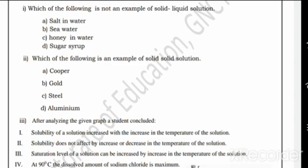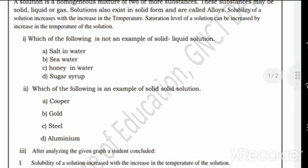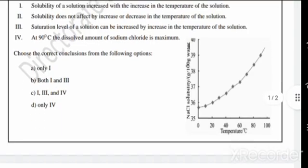Third: After analyzing the given graph, a student concluded. The first answer is C: honey in water. Second is steel, C. Third is B: both 1 and 3 - solubility of a solution increased with the increase of temperature, and saturation level can be increased by increase in temperature.